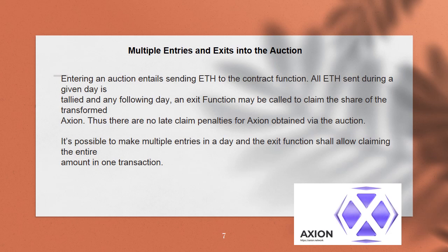Entering an auction entails sending ETH to the contract function. All ETH sent during a given day is tallied, and on any following day an exit function may be called to claim the share of the transformed Axion. There are no late claim penalties for Axion obtained via the auction. It is possible to make multiple entries in a day, and the exit function allows claiming the entire amount in one transaction.